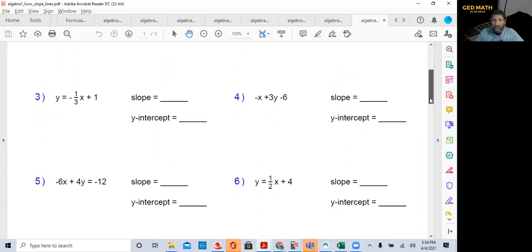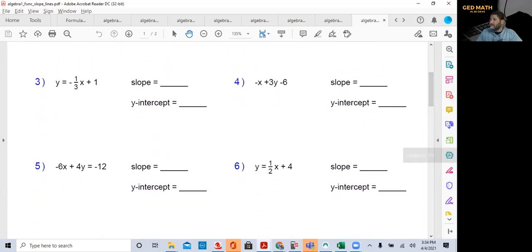But in this video, we're concentrating on slope-intercept form. Again, slope-intercept form is y equal mx plus b. So whatever's in front of the x, so my slope is negative one-third. My y-intercept is plus one. Very easy.